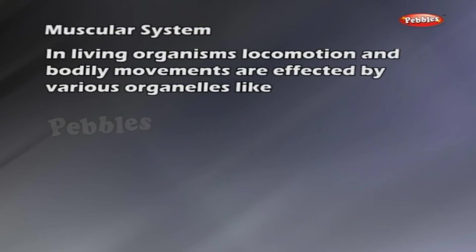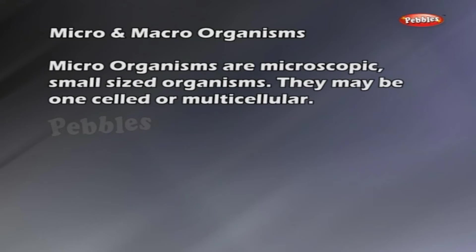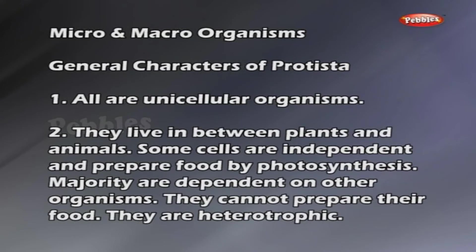In living organisms, locomotion and bodily movement involve the ankle, foot and toes. Micro-organisms are microscopic, small-sized organisms. They may be one-celled or multicellular. General characters of Protista: all are unicellular organisms. They live in between plants and animals. Some cells are independent and prepare food by photosynthesis. Majority are dependent on other organisms and cannot prepare their own food — they are heterotrophic. Slime molds and protozoa are included under this group.